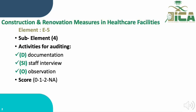Construction and renovation measures in healthcare facilities belong to Domain E, which is the last domain in the ICA tool 2023, and this element E5 is related to construction and renovation. It consists of four sub-elements. The auditing activities require document review (D), staff interview (SI), and observation (O). Scoring ranges from zero (not met), one (partial), two (full), and NA (not applicable).